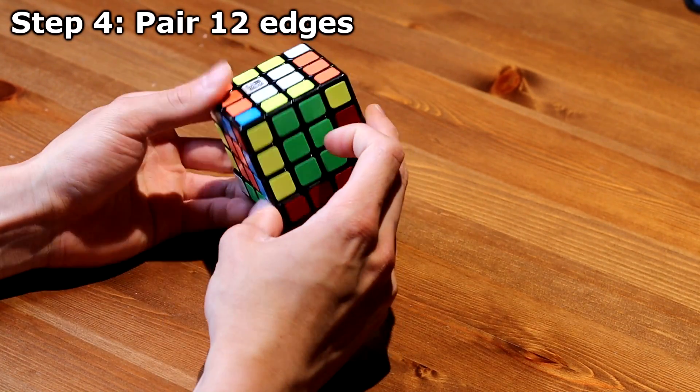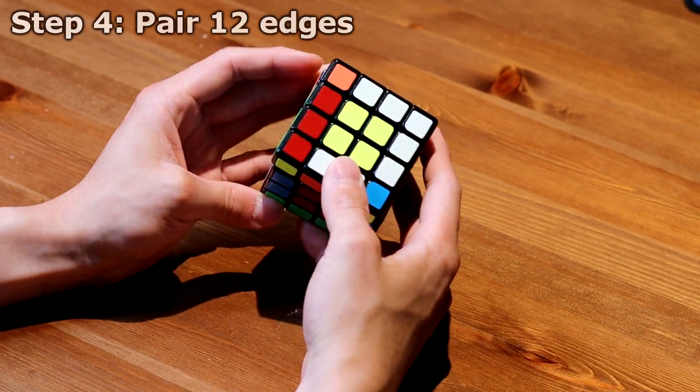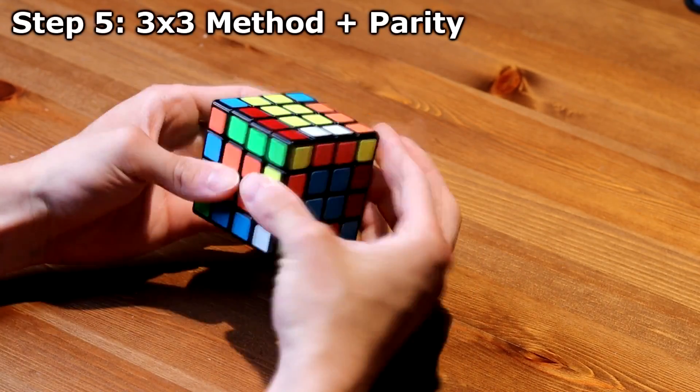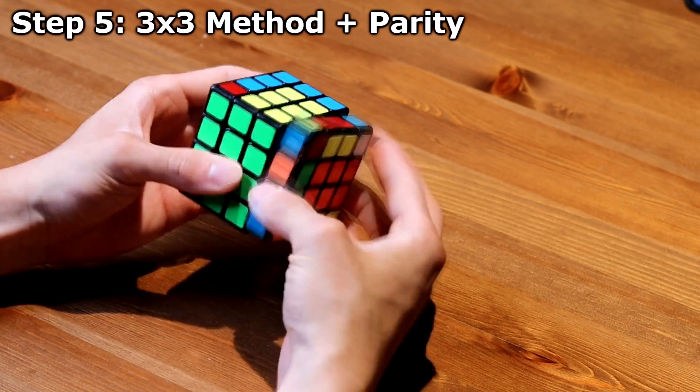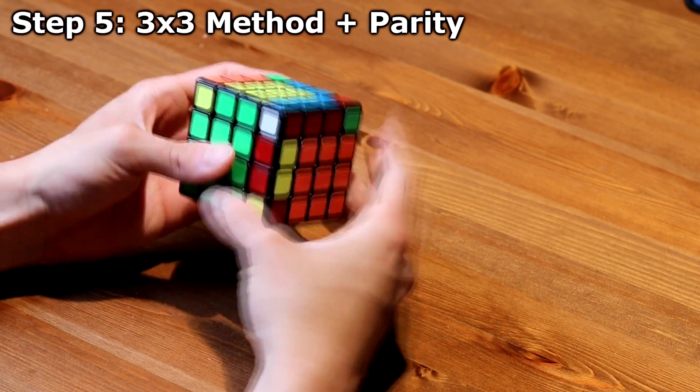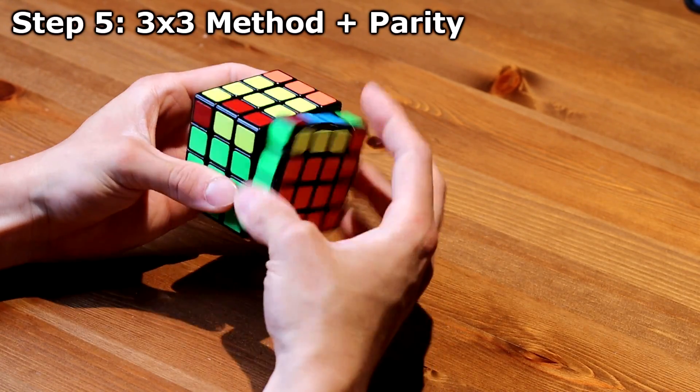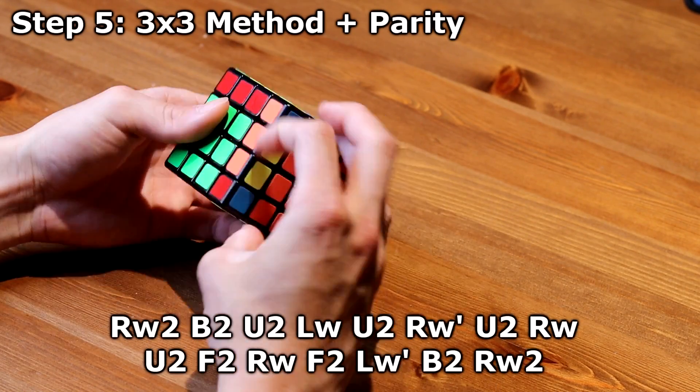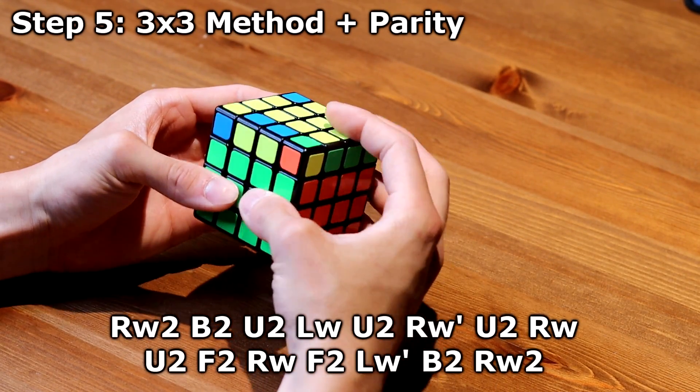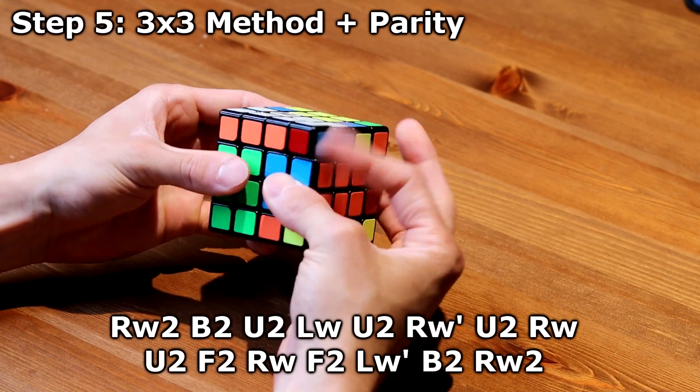Now, after all 12 edges and six centers are done, I complete my white cross. First two layers done. And I notice I have parity, so I do that algorithm. It's on the screen right now.